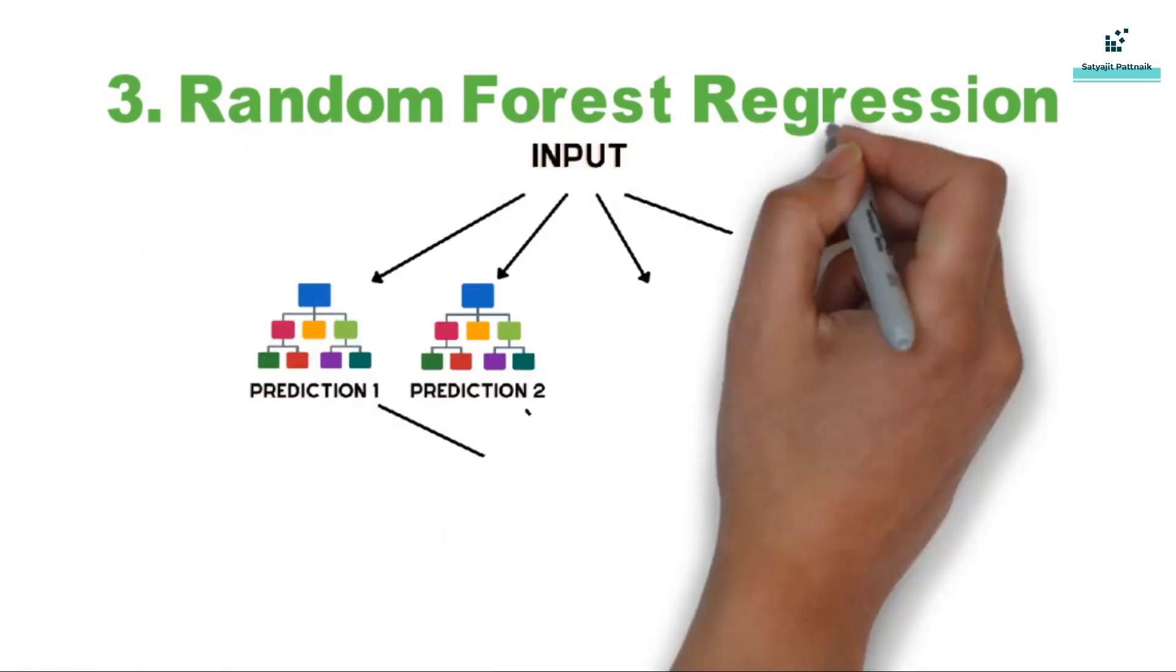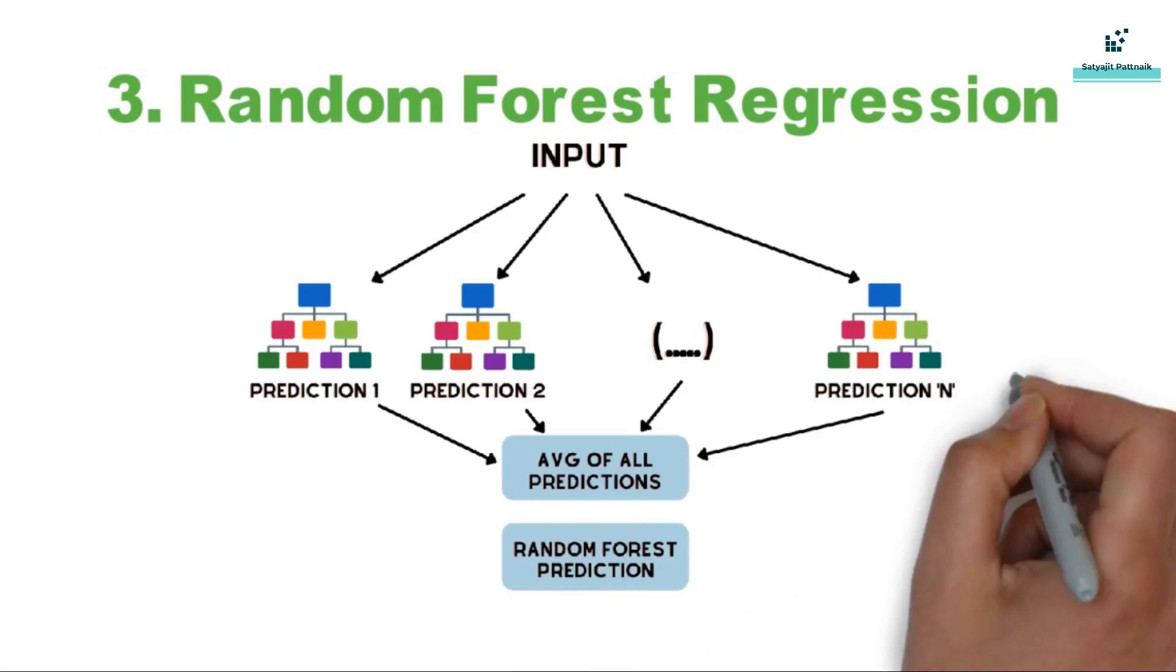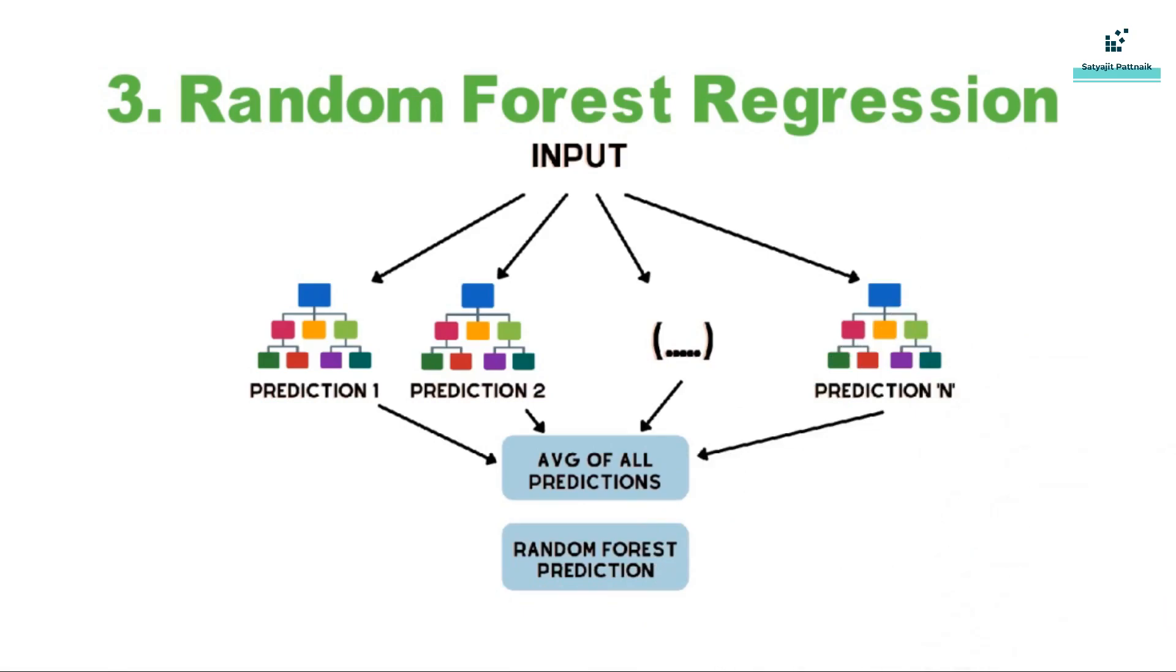The next algorithm is random forest regression. Random forest involves multiple decision trees using bootstrapped datasets of original data and randomly selecting a subset of variables at each step of the decision tree. The model then selects the mode of all the predictions of each decision tree, and by relying on the majority wins model, it reduces the risk of error from individual trees.